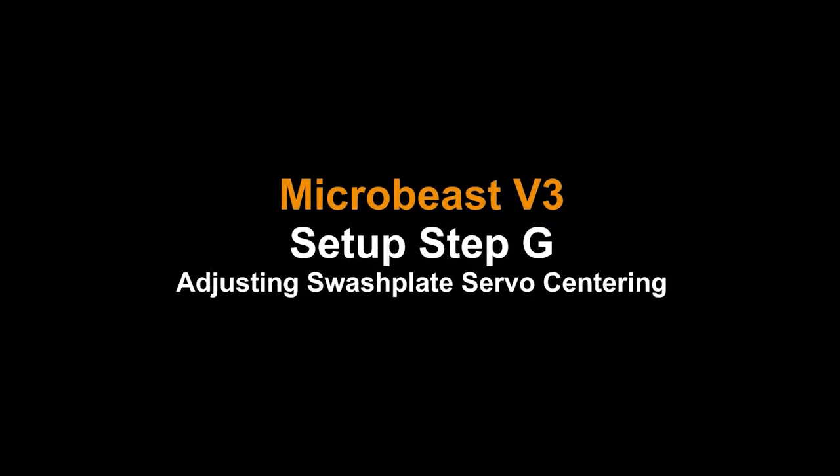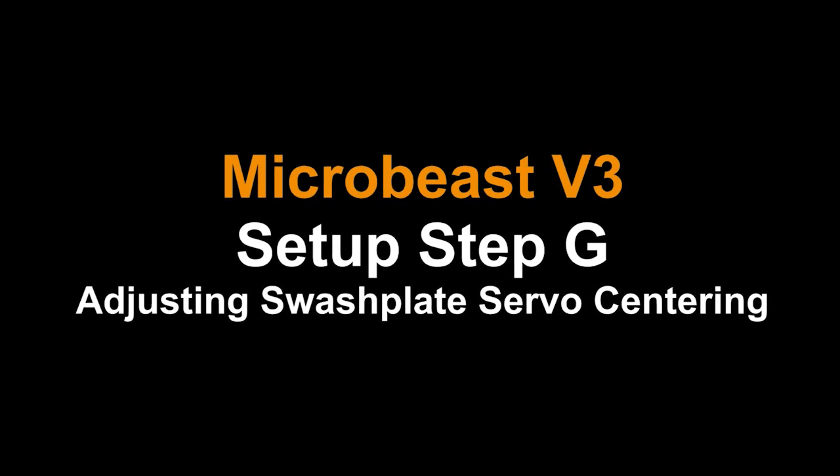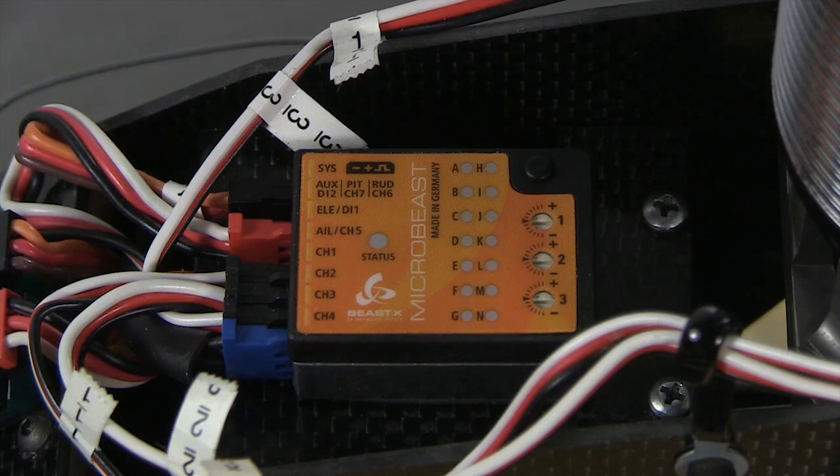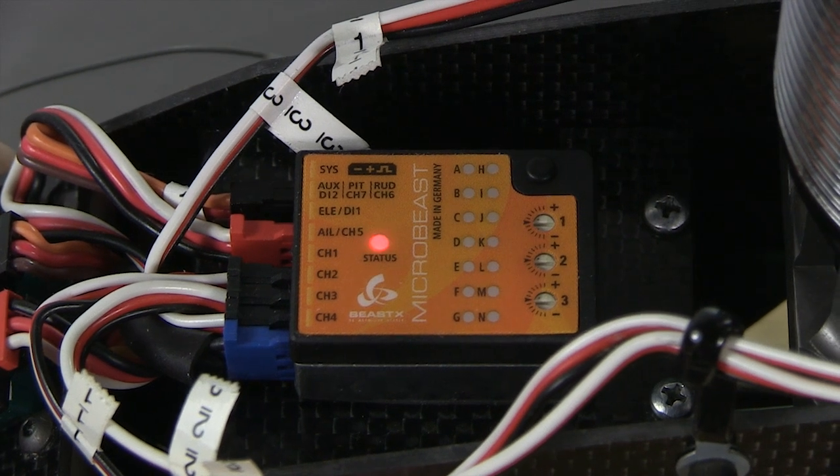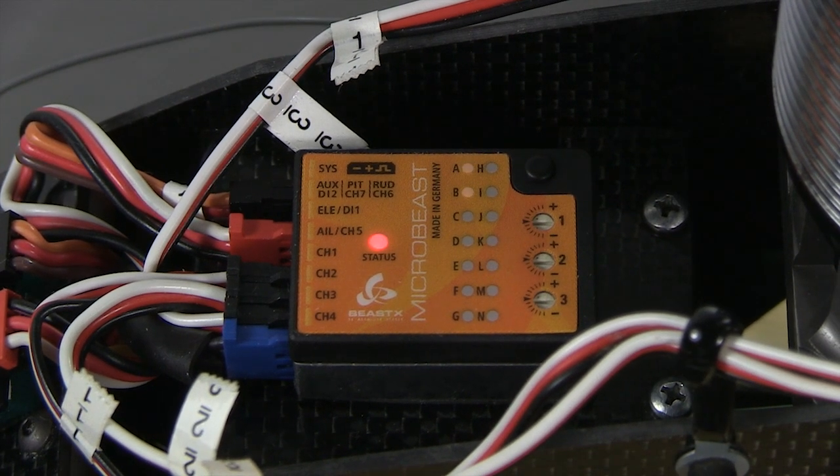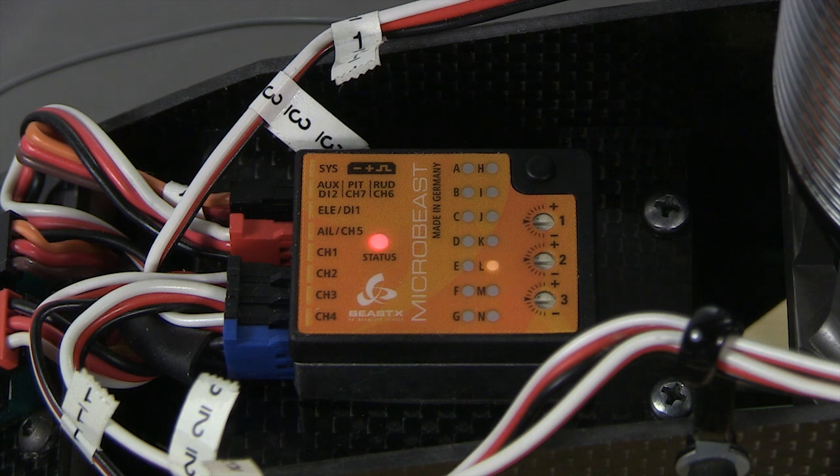Welcome to Microbeast version 3, Step G. This is a fun step I really enjoyed making. Turn on your transmitter, then the receiver. Let the Microbeast initialize. Since we can't use sub-trim in our radio to set the servo arm square, Step G allows us to do that in the Microbeast.